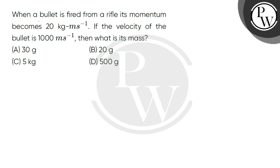Hello, let's read the question. When a bullet is fired from a rifle, its momentum becomes 20 kg meter per second. If the velocity of the bullet is 1000 meter per second, then what is its mass?